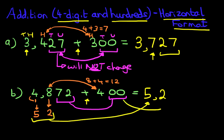And as for the remainder of it, the 72 here remains the same. So the answer becomes 5,272.